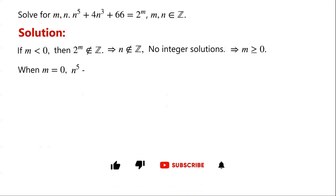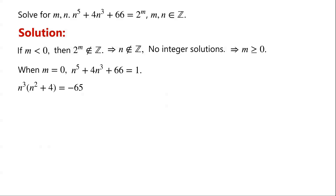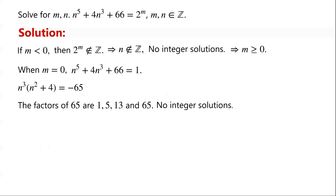When m equals 0, the equation becomes n to the power of 5 plus 4n cubed plus 66 equals 1. We can write n cubed times (n squared plus 4) equals negative 65. The factors of 65 are 1, 5, 13, and 65. Clearly the only integer whose cube and whose square plus 4 are factors of 65 is 1, so the only possible solution is n equals negative 1. However, when n equals negative 1, the left side equals negative 5, so the equation has no integer solutions when m equals 0.